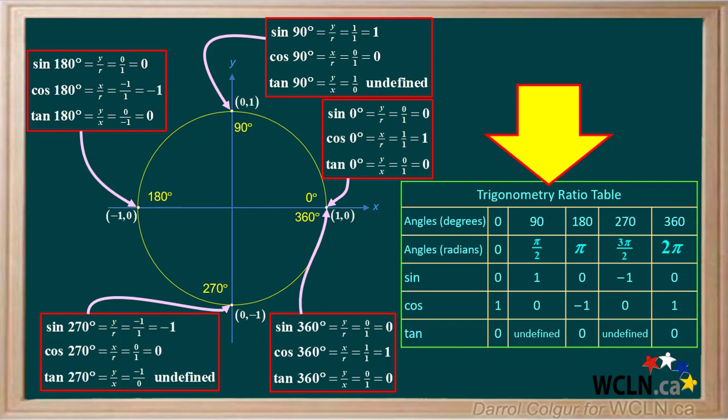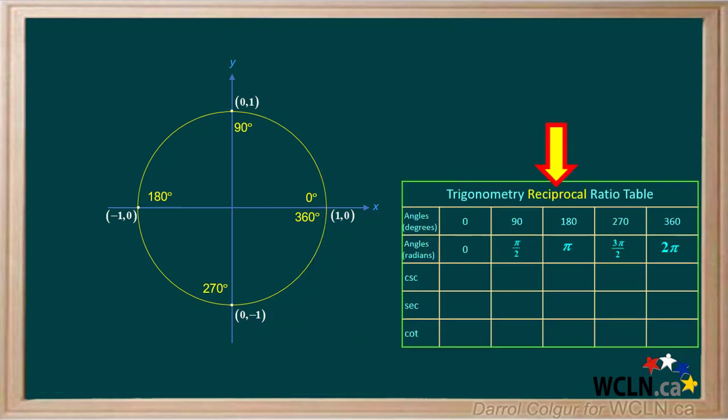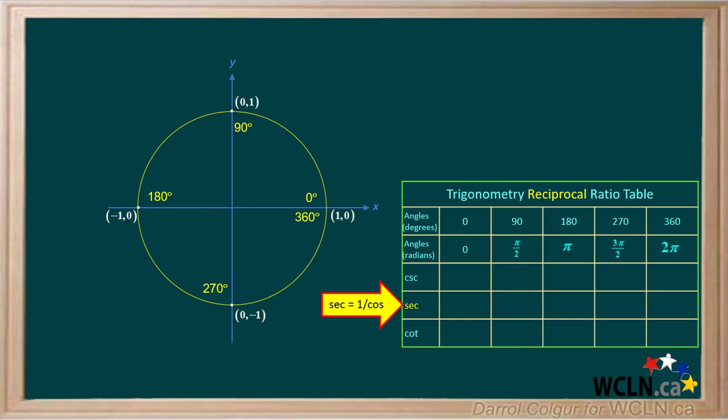Make sure you're able to find all these values on your own. Now we'll determine the reciprocal trigonometric ratios for the angles here. Remember the cosecant is the reciprocal of the sine, or 1 over sine. The secant is the reciprocal of cosine, or 1 over cosine. And the cotangent is the reciprocal of the tangent, or 1 over tangent.